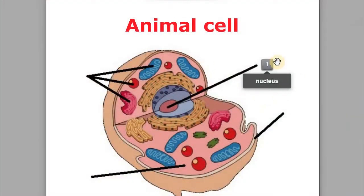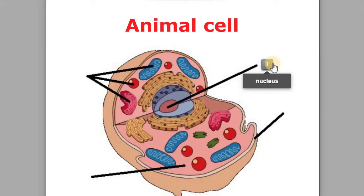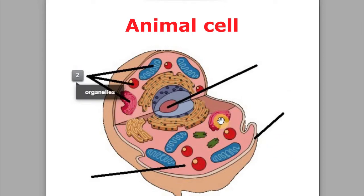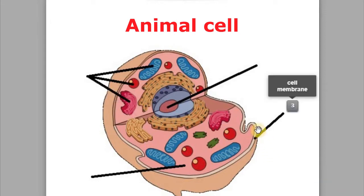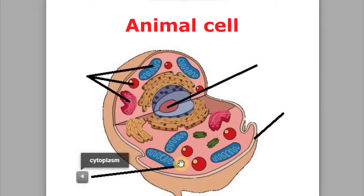Let's analyze an animal cell. Here in the center we have the nucleus, which is like the brain of the cell — it controls all the cell's activities. There are many different components which carry out different functions, which are the organelles. Then we have the cell membrane which surrounds and protects the cell. And we also have the cytoplasm, which is a thick clear liquid where all the organelles float in.